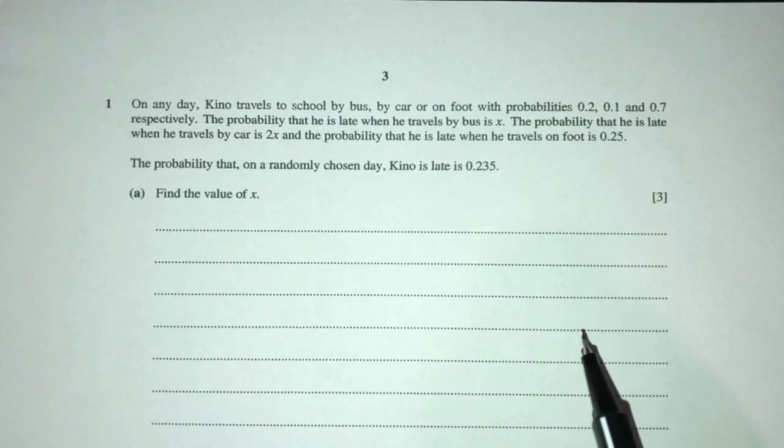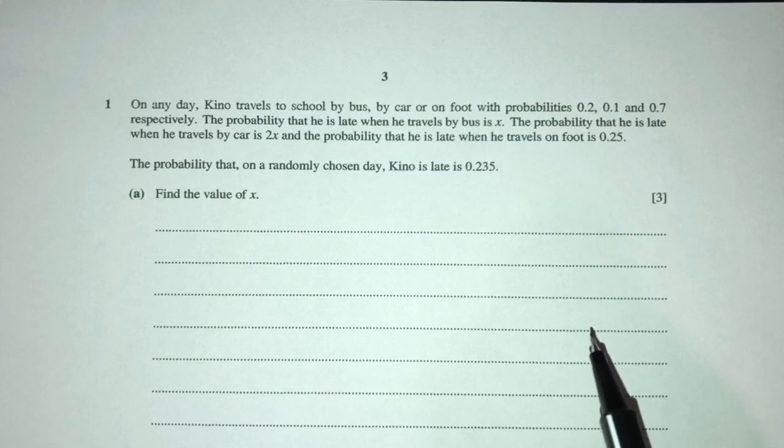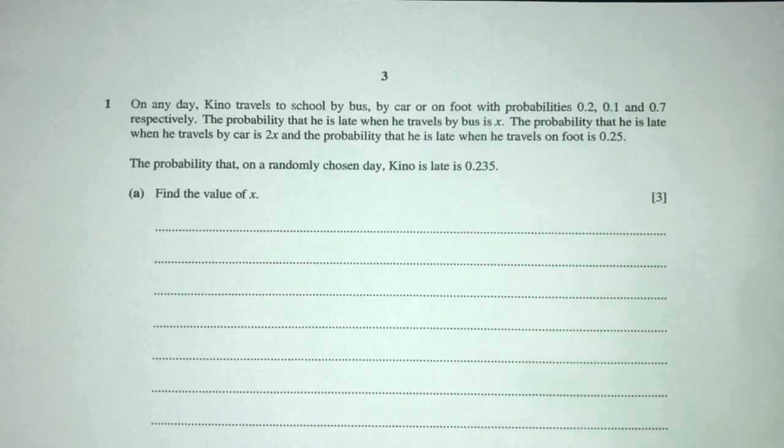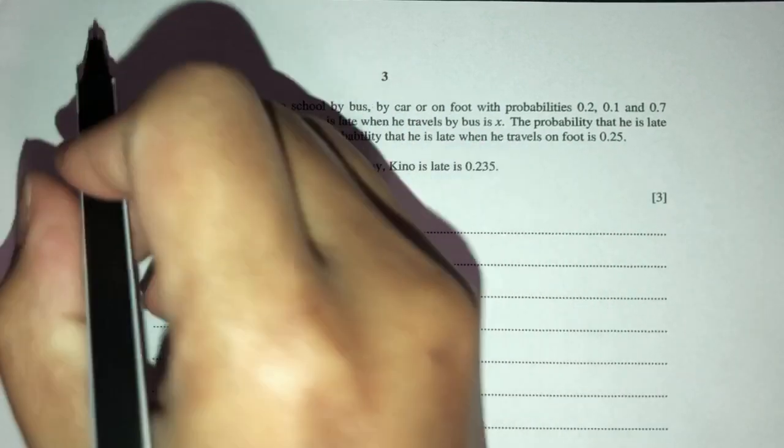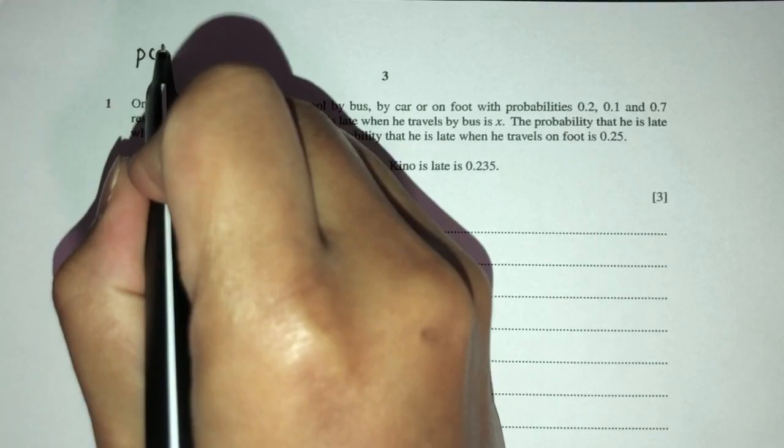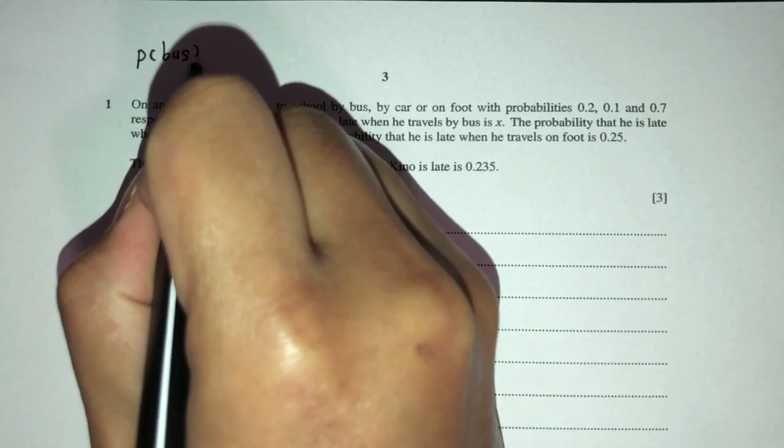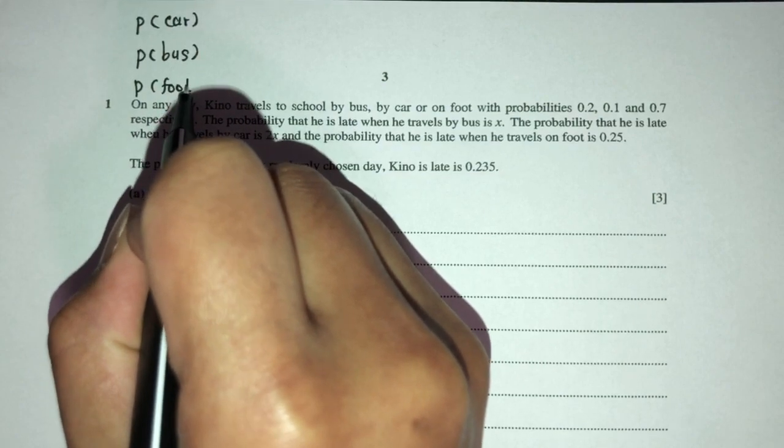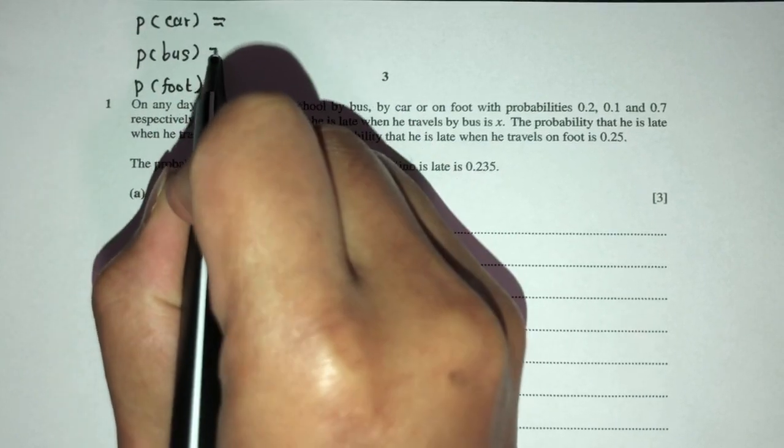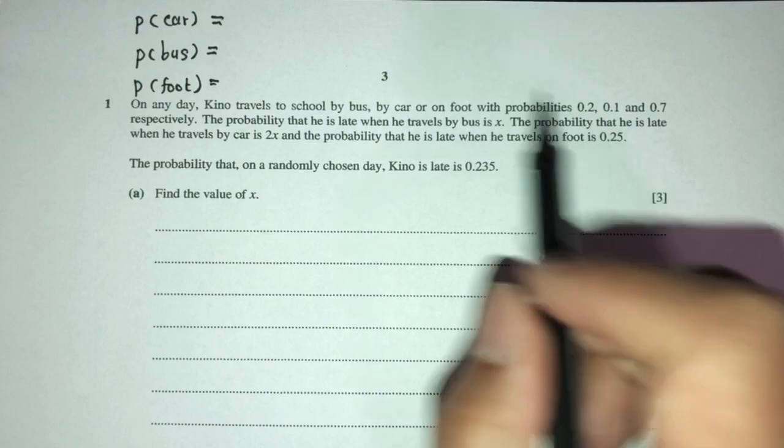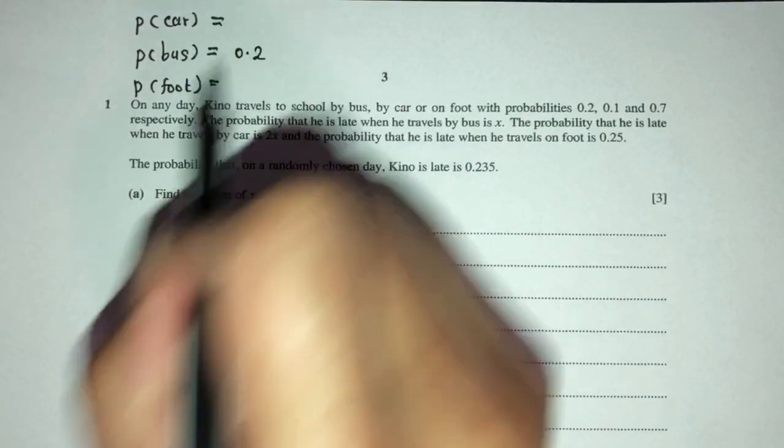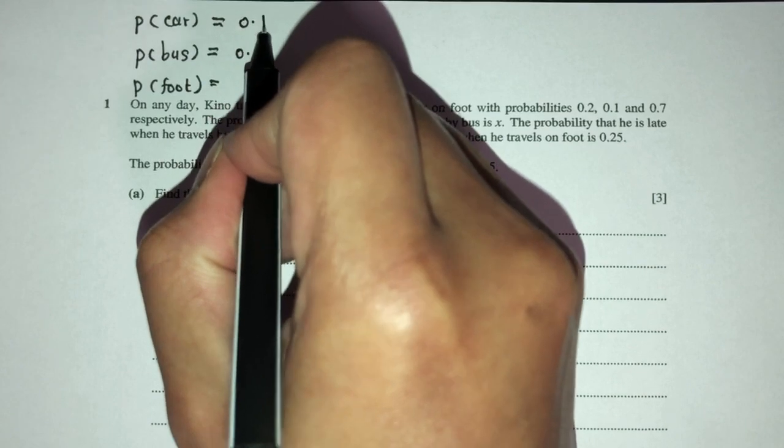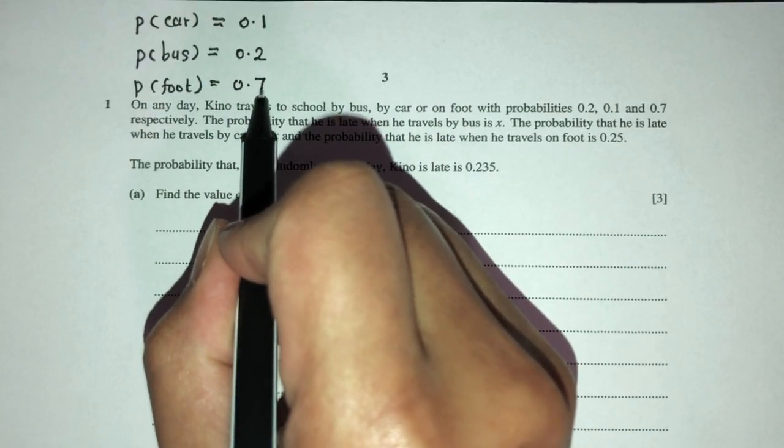So let's move on to question number one. On any day, Kino travels to school by bus, by car, or on foot. So we have three possible ways, right? By bus, we have by car, and then by foot. And these are given to you already as what value? The first one is 0.2, by car will be 0.1, and on foot should be 0.7.